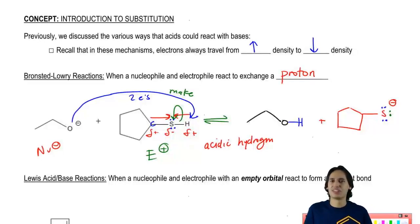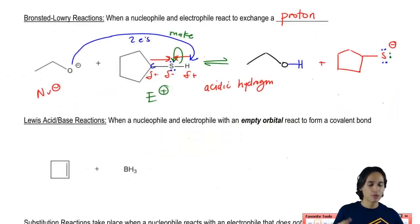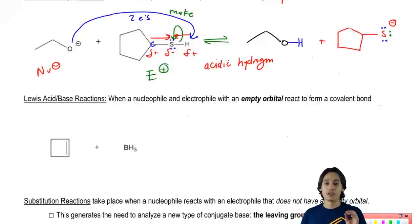So now what I want to show you guys is how does this relate to substitution. Well, remember that we also had the Lewis acid and base definition that didn't have to do with protons. And what that means is that sometimes you're going to have electrophiles and nucleophiles that want to react together, but there's no acidic hydrogens that they can react with. Does that mean that you give up? No. You still react.